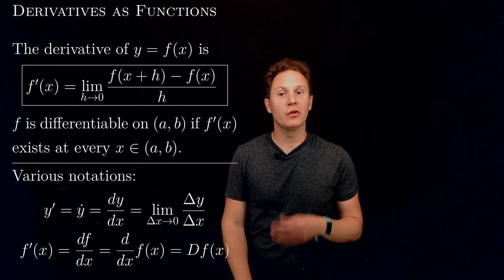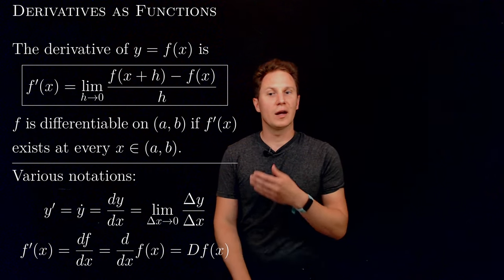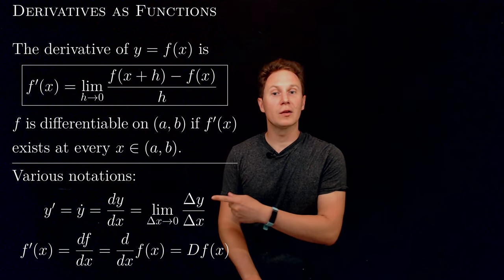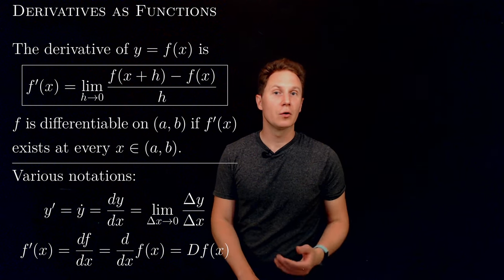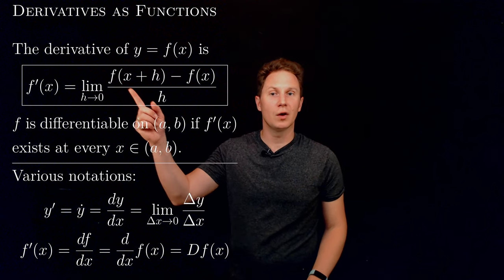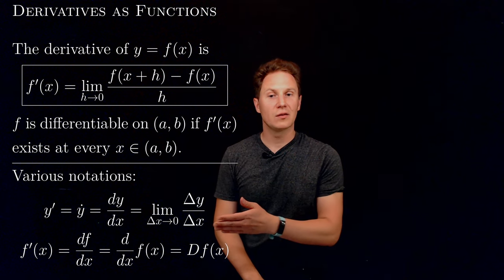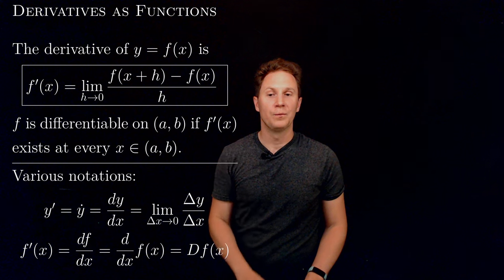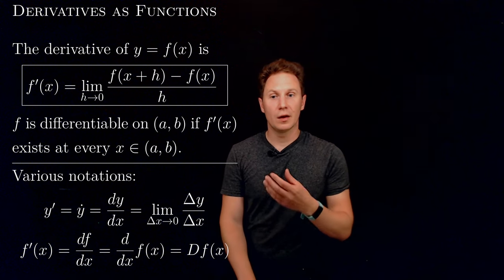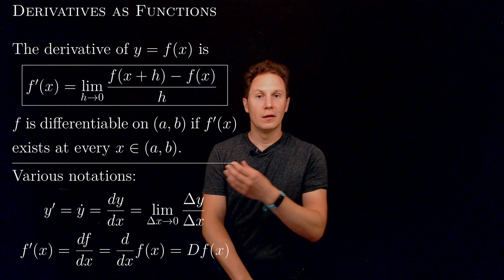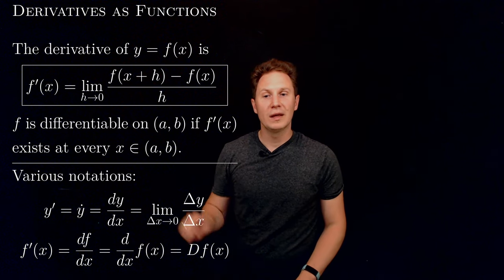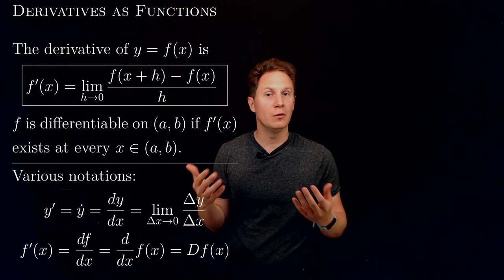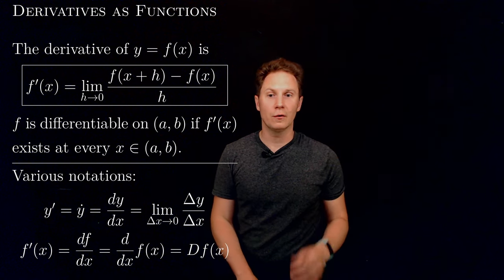So dy/dx is the limit as Δx approaches 0 of Δy/Δx — Δy being the rise, the difference of coordinates along the y-axis, whereas Δx is the run, the difference of coordinates along the x-axis. So be careful when dealing with the Leibniz notation; we cannot handle and manipulate dy/dx as if it were a normal fraction in general.